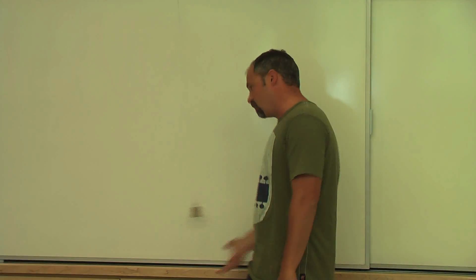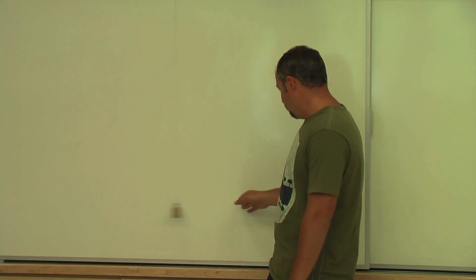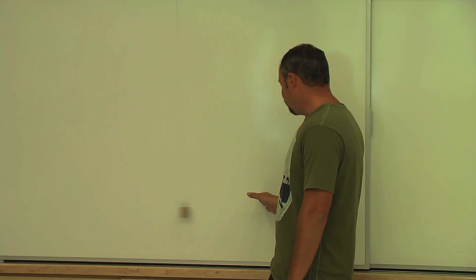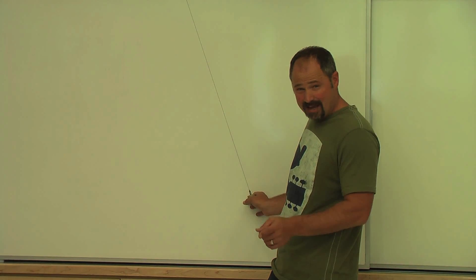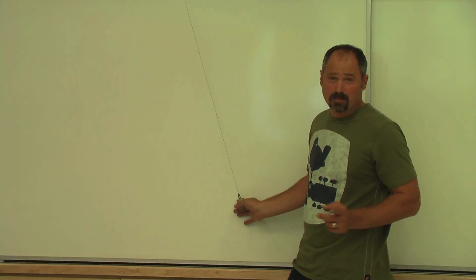And then the harmonic motion, well, you can see it's going back and forth. One cycle is from now until now. That's one cycle. And if you time how long it takes, that's one period.